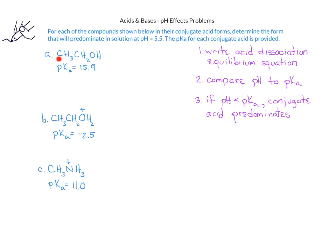In the first problem with ethanol, we see that it has a pKa of 15.9. We'll go ahead and write the acid dissociation equilibrium showing ethanol reacting with water to form the ethoxide ion and the hydronium ion. When we compare the pH of the solution and the pKa, the pH of 5.5 is less than the pKa of 15.9. This means that for this particular compound, ethanol will predominate in a solution with a pH of 5.5.